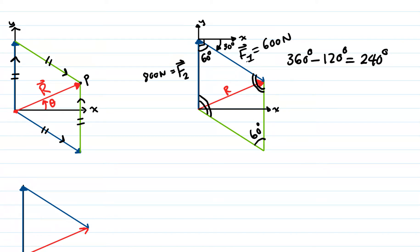As I said before, opposite angles are congruent. The 240 degrees is the sum of the two remaining angles. So 240 divided by 2 gives us 120 degrees. So these two remaining angles are each 120 degrees.